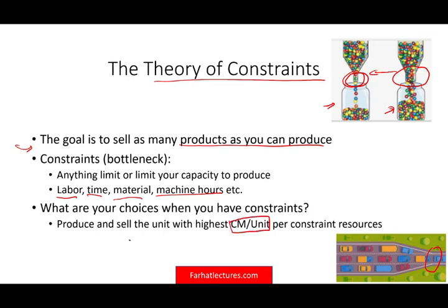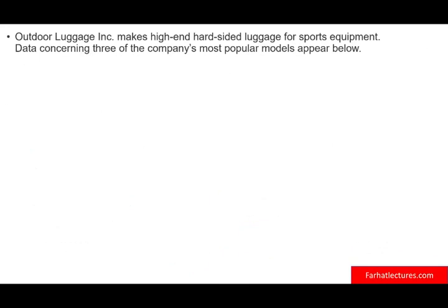Students forget about the other side of this: it must be per constraint resource. The first thing you have to do is identify what your bottleneck is in production. Then you use the contribution margin per the constraint resource — we'll see what that means in an example. In this theory, we use the term throughput contribution, which is essentially sales minus variable cost, which is contribution margin.